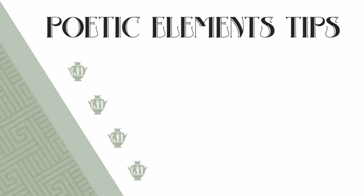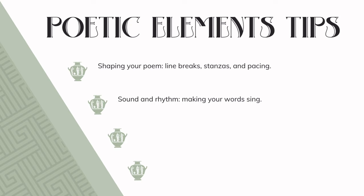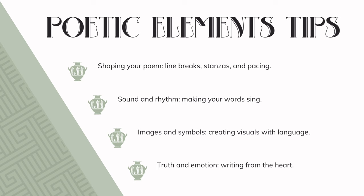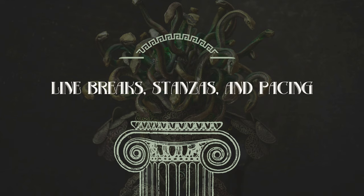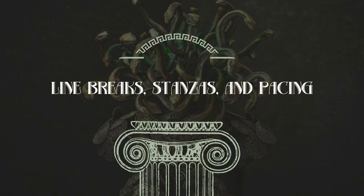When you write poetry, here are a few poetic elements to finesse the editing process: shaping your poem through line breaks, stanzas, and pacing; sound and rhythm — making your words sing; images and symbols — creating visuals with language; and truth and emotion — writing from the heart.